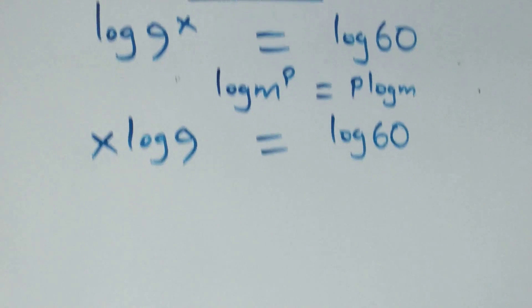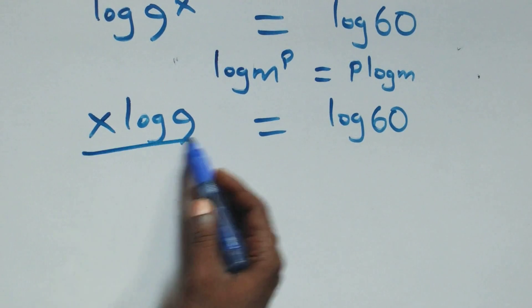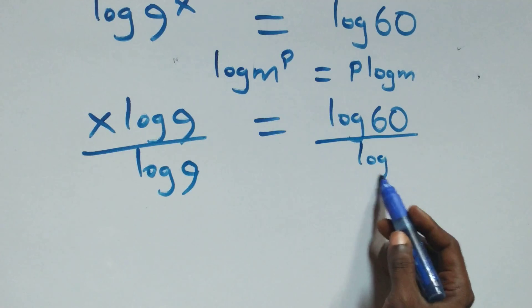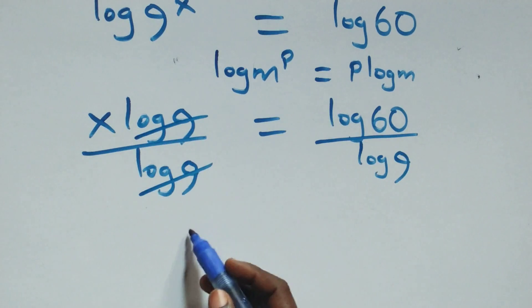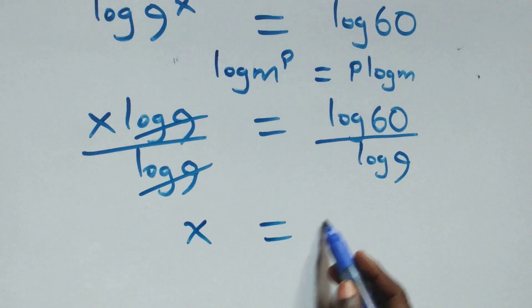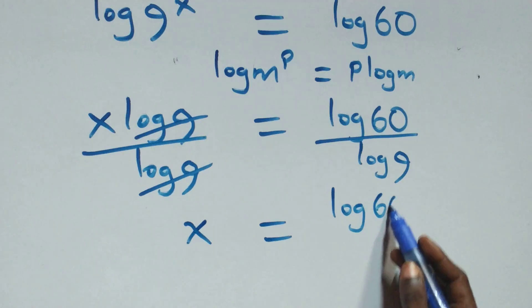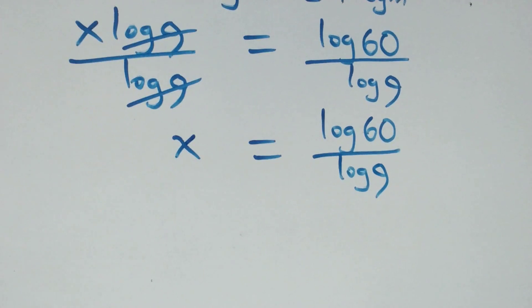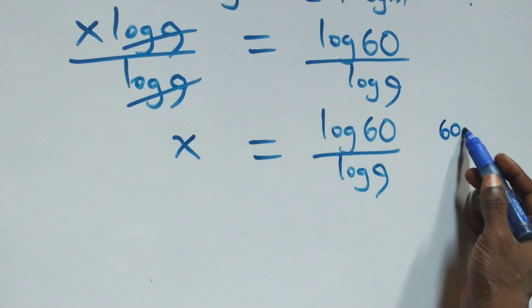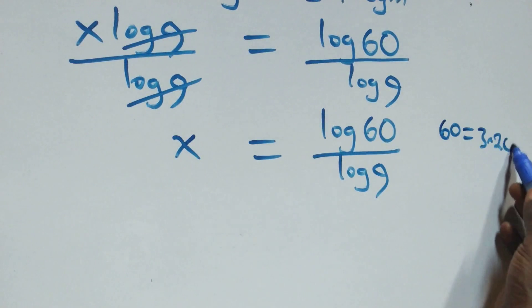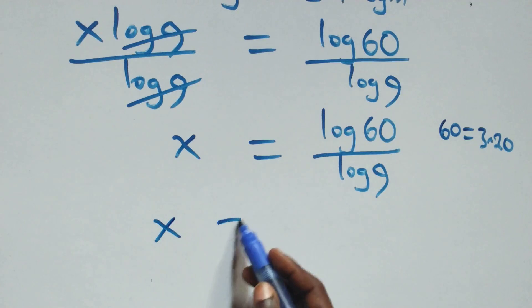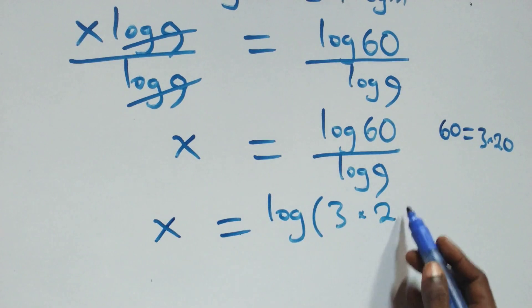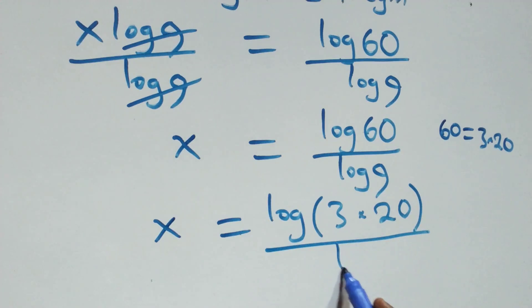The next step: we divide both sides by log 9. Log 9 cancels, and we have x equals log 60 over log 9. From here we can write 60 as 3 times 20, which gives x equals log(3 times 20) over log 9.